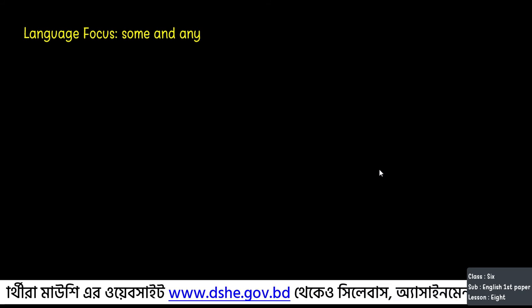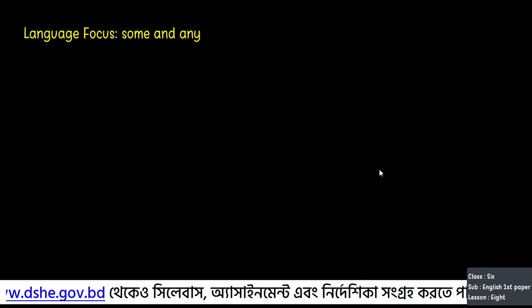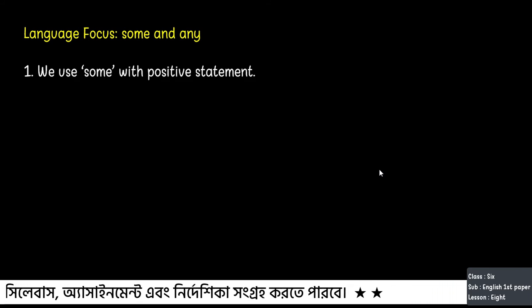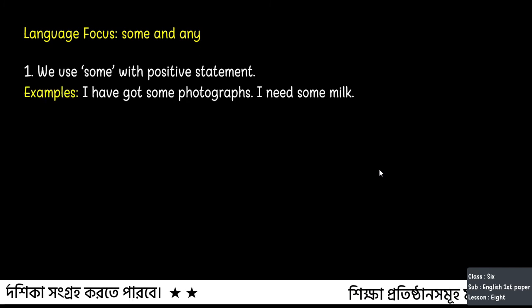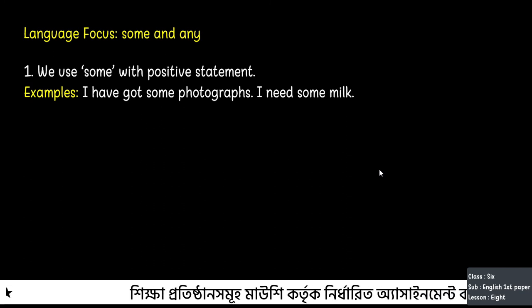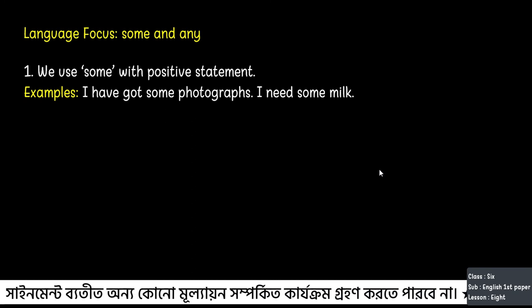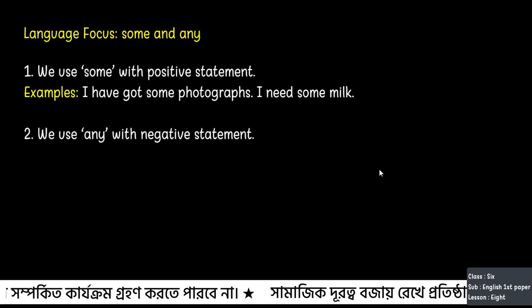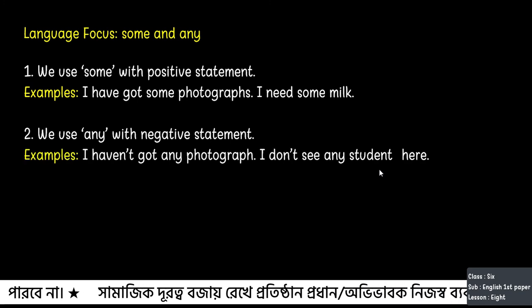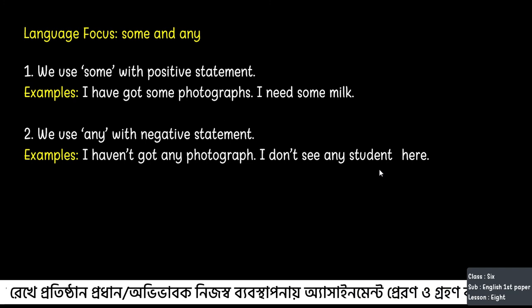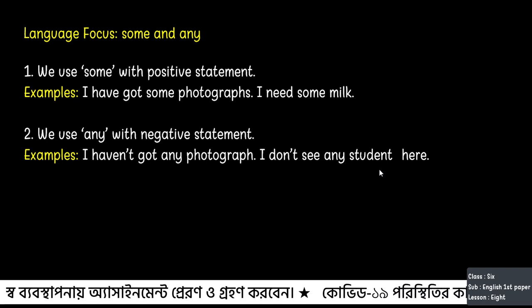Now, a very important Language Focus: the use of 'Some' and 'Any'. Some and Any are very common in statements and question sentences. Both modify nouns and indicate quantity, but their uses are not the same. Number one: we use 'Some' with positive statements. For example: 'I have got some photographs.' 'I need some milk.' Number two: we use 'Any' with negative statements. For example: 'I haven't got any photographs.' 'I don't see any student here.'